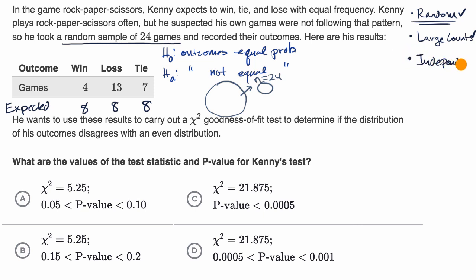And then the last condition is the independence condition. If we aren't sampling with replacement, then we just have to feel good that our sample size is no more than 10% of the population. And he can definitely play more than 240 games in his life, so we would assume that we meet that condition as well. And so with that out of the way, we can actually calculate our chi-squared statistic and try to make some inference based on it.